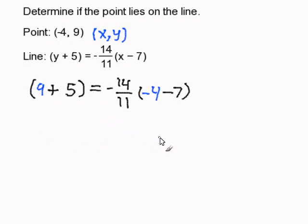Now, I'm going to simplify my equation. 9 plus 5 is 14. And negative 4 subtract 7 is negative 11.